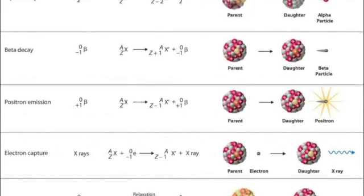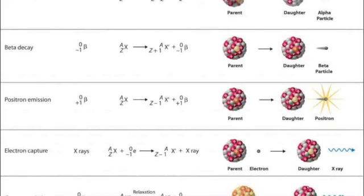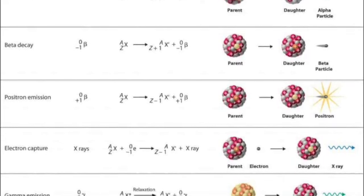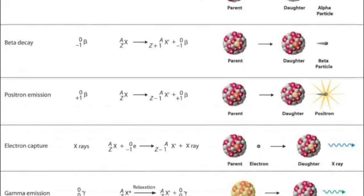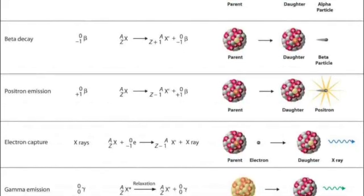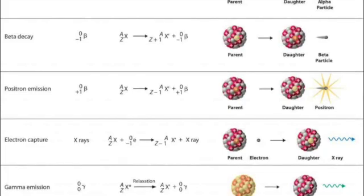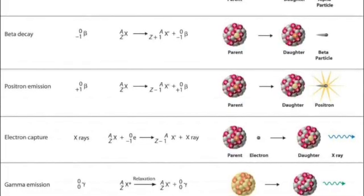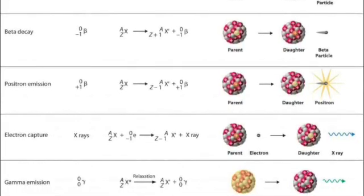The beta-minus decay, which is an emission of an electron. It's also called an electron emission. And we also learned about the positron emission, which is when a positron or a positive electron is emitted from a nucleus.